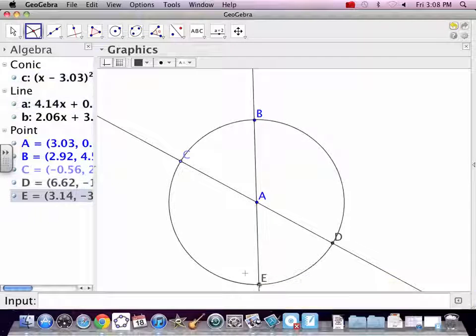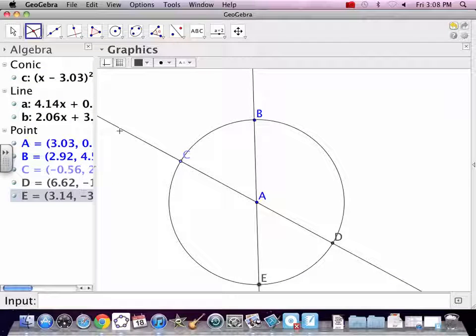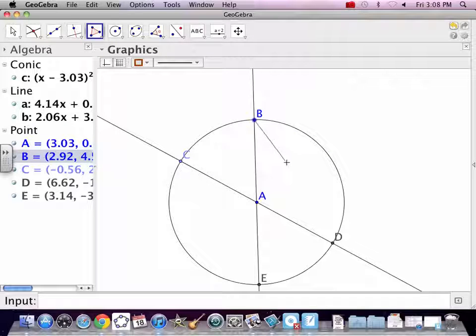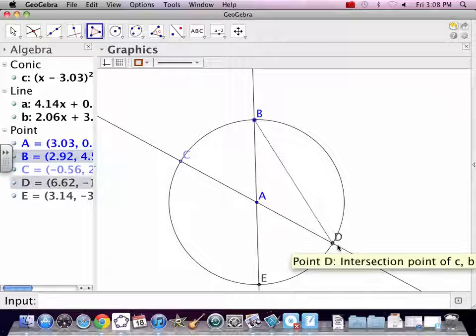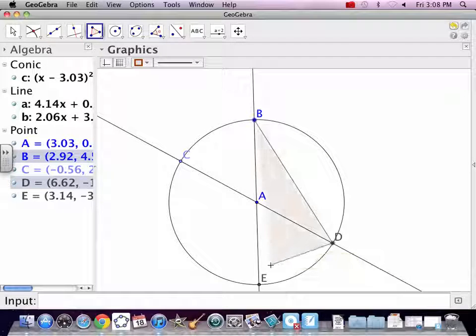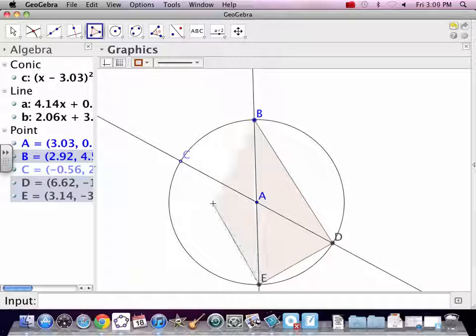And then right here. Did I miss? I missed. So B, C, D, and E are the corners of our rectangle. So because the diagonals are bisectors.